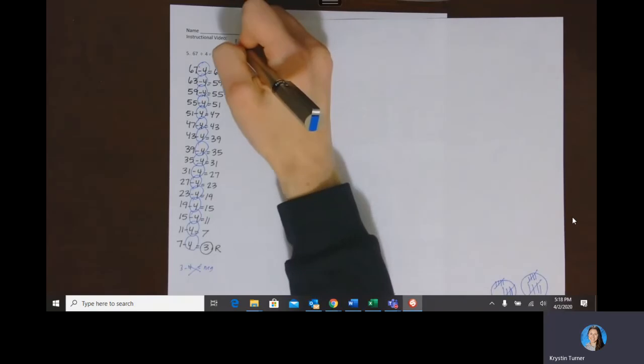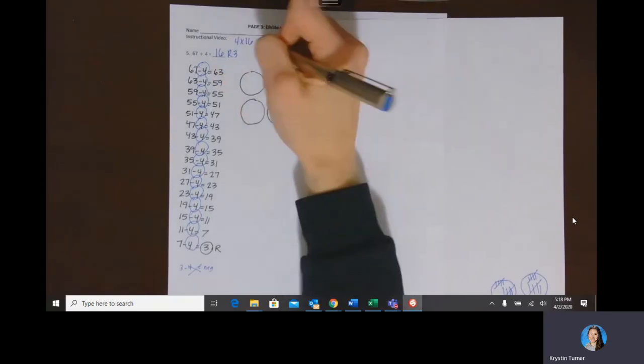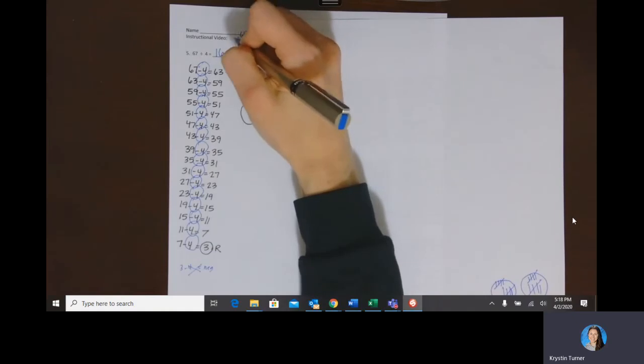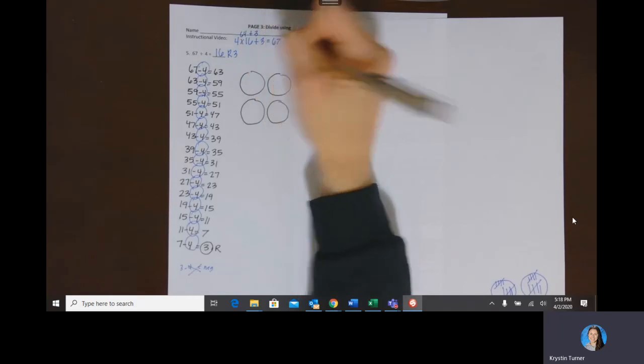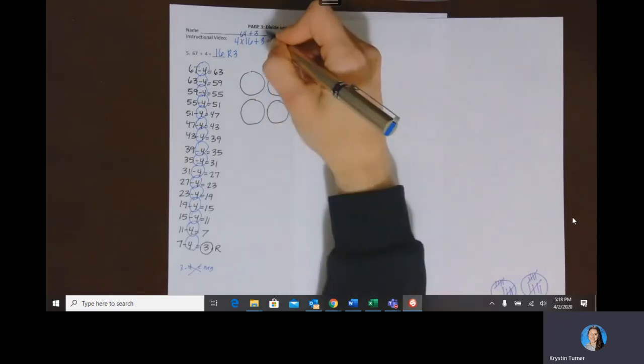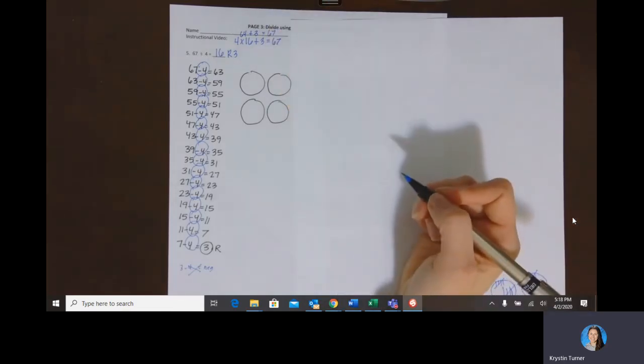So what that means is that 4 times 16 is 64, and if I add three more to 64, I get that number 67. So that remainder has to be added on to those 16 groups of four.